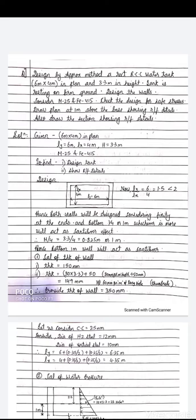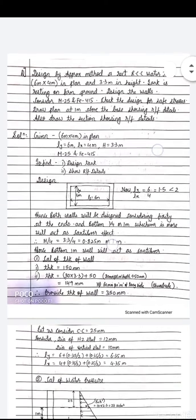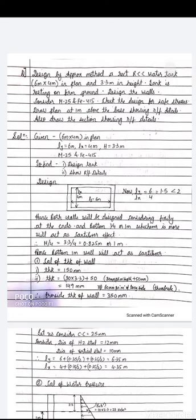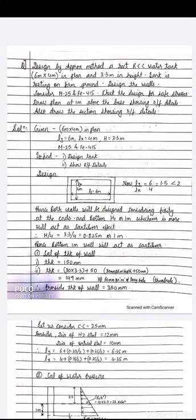This is a typical question which can be asked in the examination. Design by approximate method: rectangular RCC water tank 6 meter by 4 meter in plan and 3.3 meter in height. The tank is resting on firm ground. Design the walls considering M25 and Fe415, check the design for safe stresses, draw the plan at 1 meter above the base showing reinforcement details, and also draw the section.